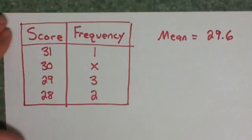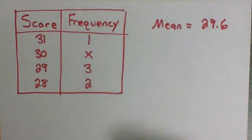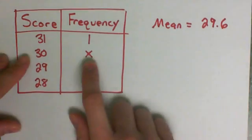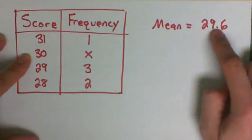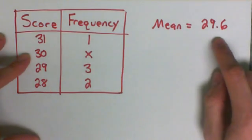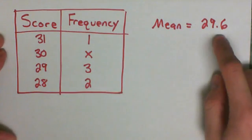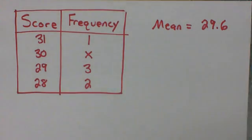So here's the problem I would like you to try. We know that there's 1 31, there's 3 29s, 2 28s, but I don't know how many 30s. And I know that the mean came out to 29.6. This is not rounded. This is the answer that you have. So go ahead and see if you can set that up, and then click the link and see if you did it correctly.